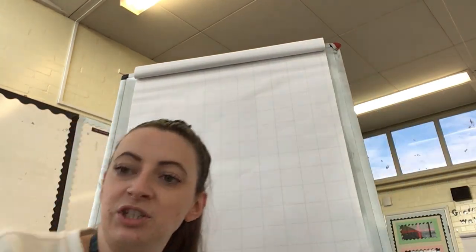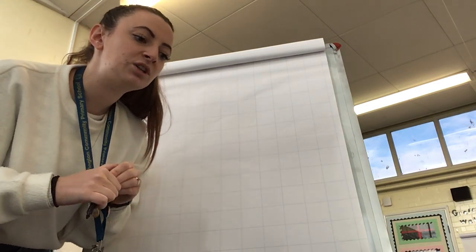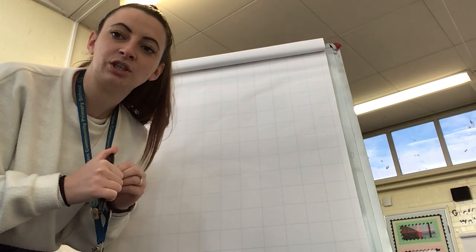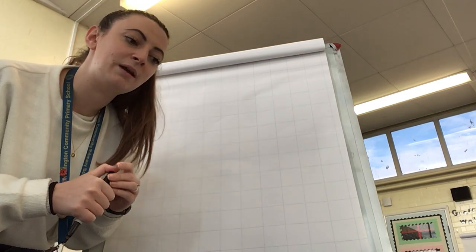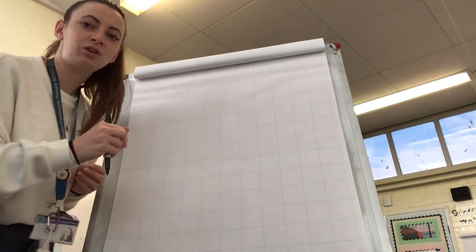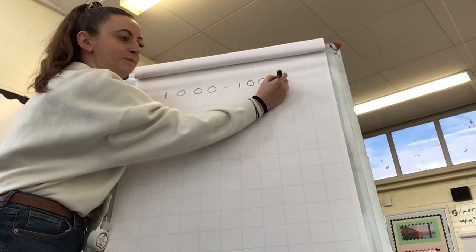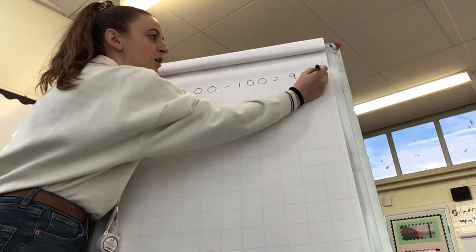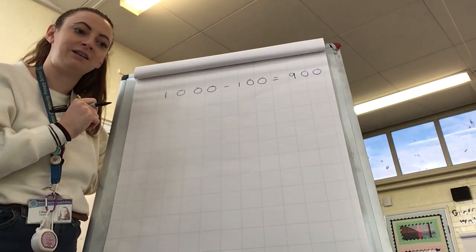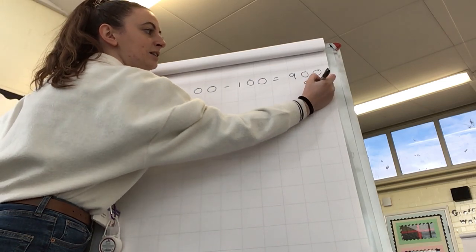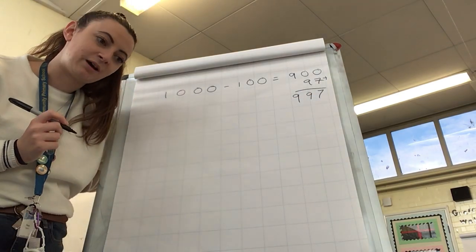Now that you've done the arithmetic questions themselves, we are going to look through how to answer some of these questions. So we're going to start with question number one, which is 197 subtracts 100. Now this is something that you may have been able to do in your head. This is something that you may want to use the column method for. I'm going to use a little bit of both. So I know that 1000 subtracts 100 is going to leave me with 900. I know that I've then got 97 left because that number that we started off with was 1097. So I need to add 97 onto the top of my number, which is going to leave me with 997 as my answer.